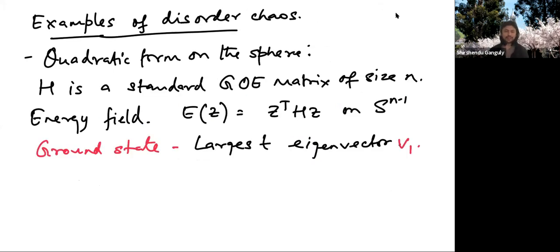Before getting into LPP, let me discuss a few examples of chaos that have already been proven in the literature. The first example is very basic: the energy landscape comes from a quadratic form on the sphere.